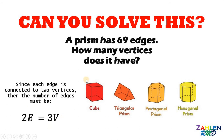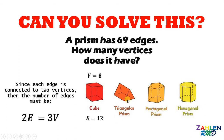Let's check if this equation is true. For a cube, we have 8 vertices and 12 edges. Using our formula: 2 times 12 gives us 24, and 3 times 8 also gives us 24 — the equation is true. For a triangular prism, we have 6 vertices and 9 edges: 2 times 9 is 18, and 3 times 6 is also 18. The equation holds.